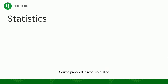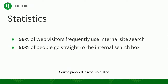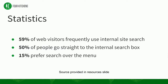Here's a quick look at some statistics related to search. On average, 59% of visitors will use internal searches on a site, and on average 50% of people start on a website and go straight for the internal search box. Also on average, 15% would rather use the search function overall. So only 15% would rather use search, but 50% go straight for the search box. Most people want to navigate but end up using search, so navigation architecture is important, but search is definitely a backbone of how people find your content.